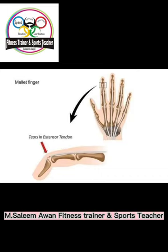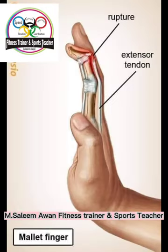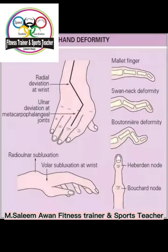The head is the distal end and is rounded. The shaft extends between the head and the base; it is concave on the palmar aspect and convex on the dorsal aspect, and the dorsal surface of the shaft presents a triangular area in its distal part. The base is the proximal end and is expanded.